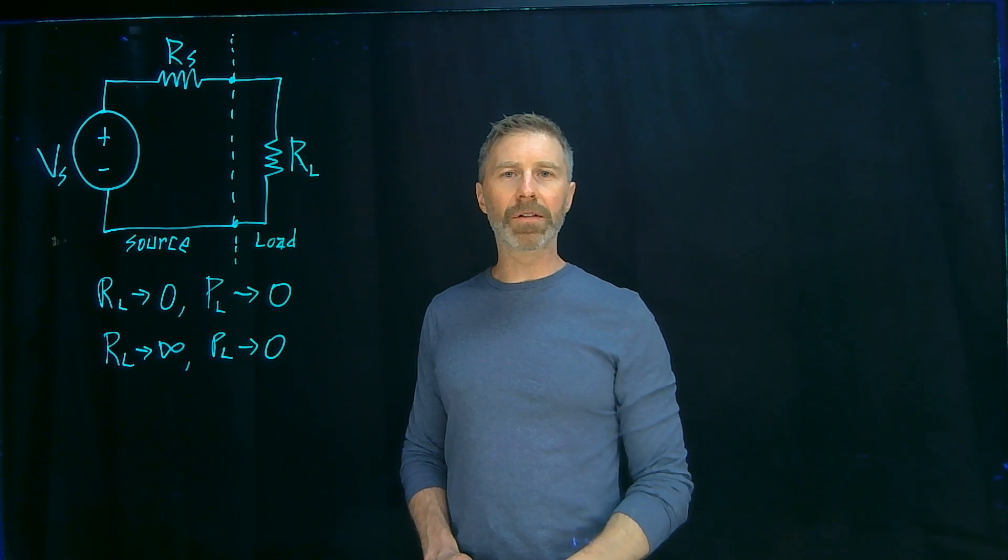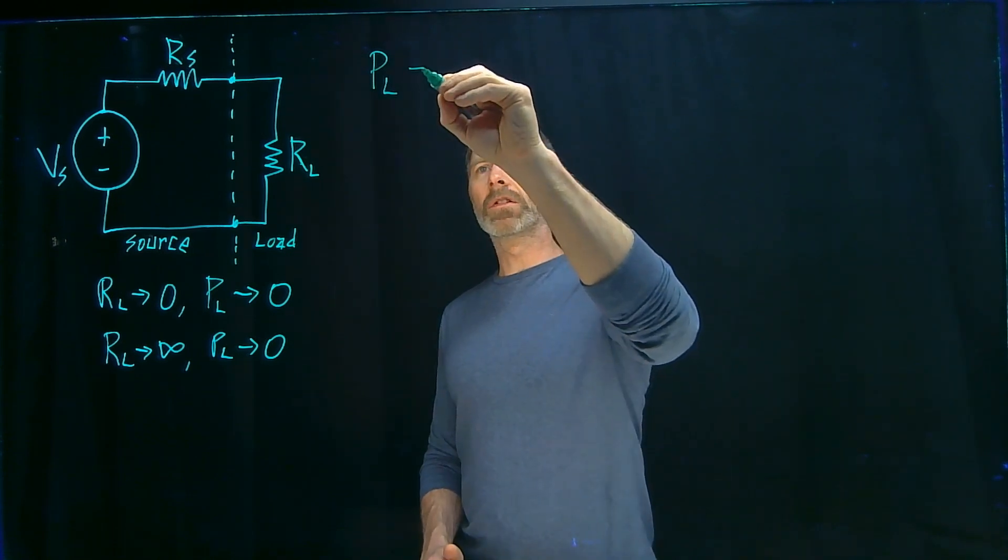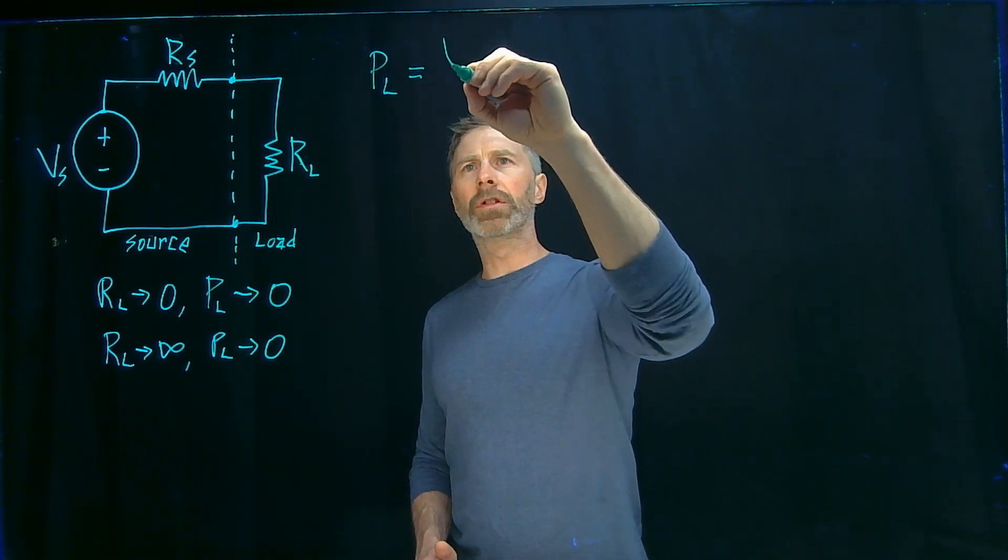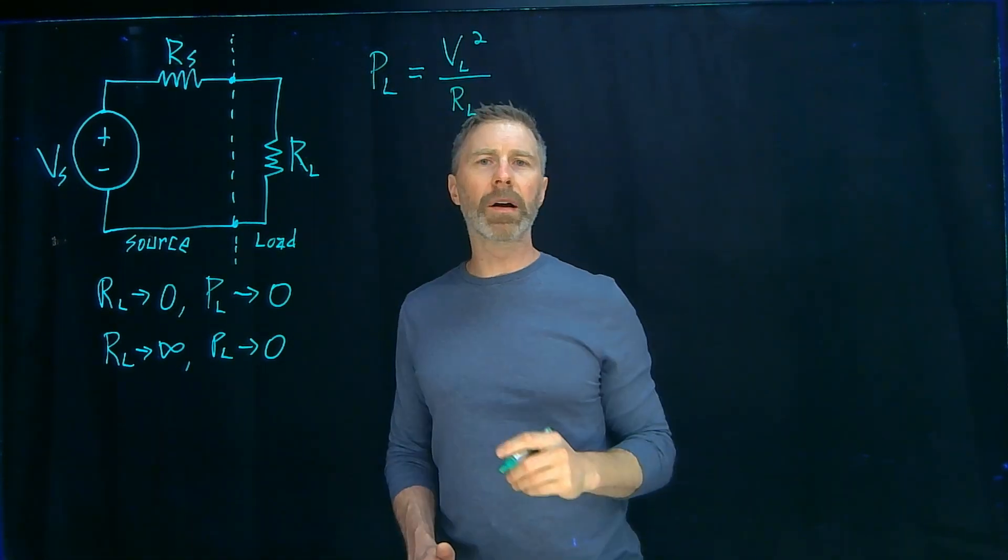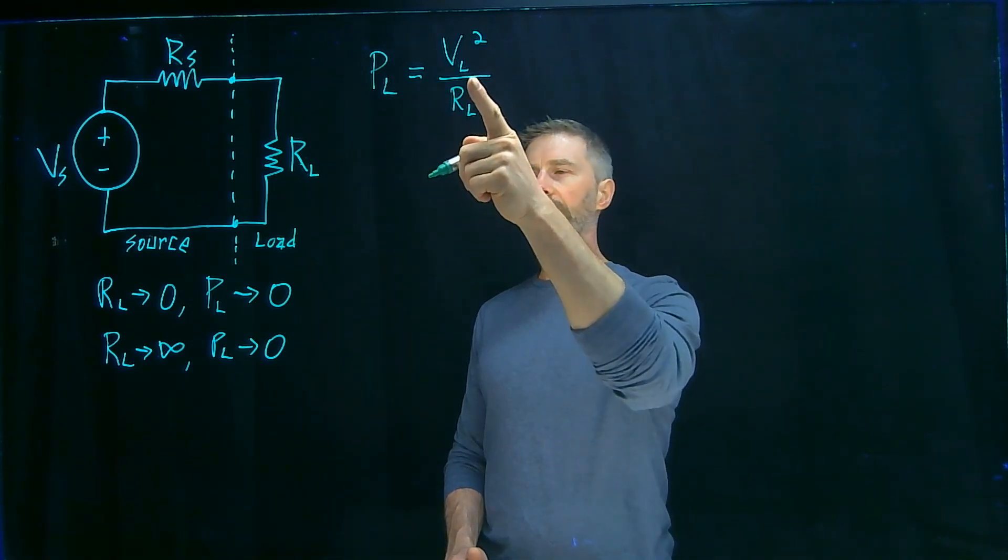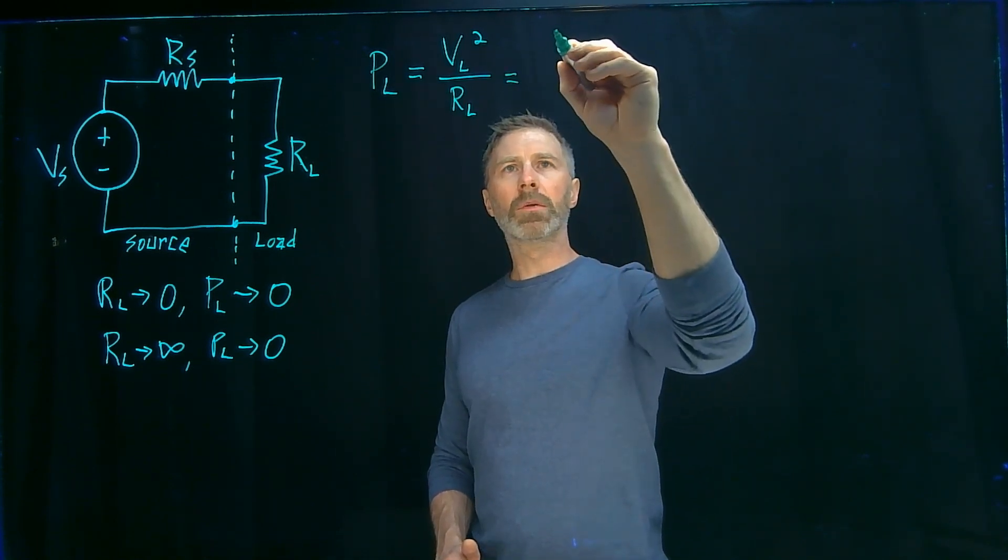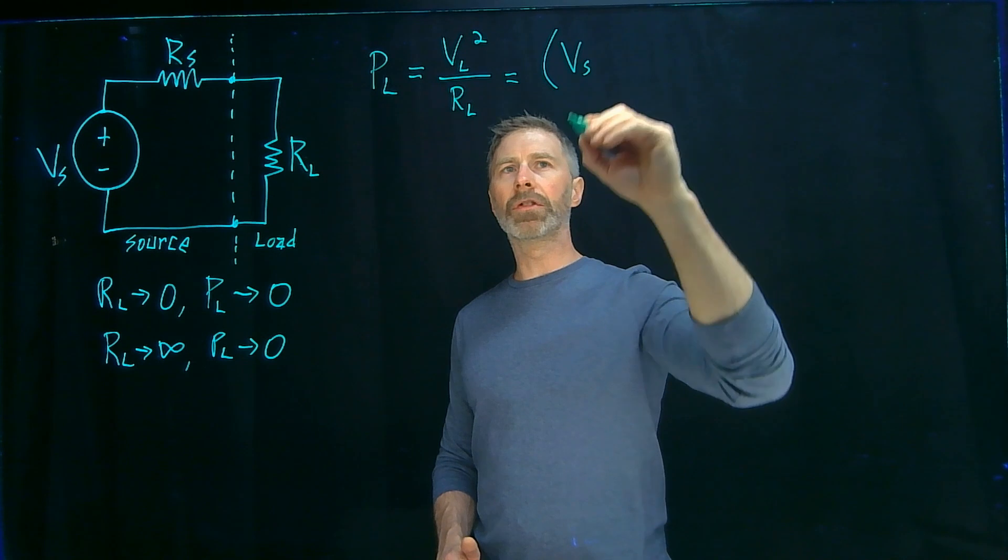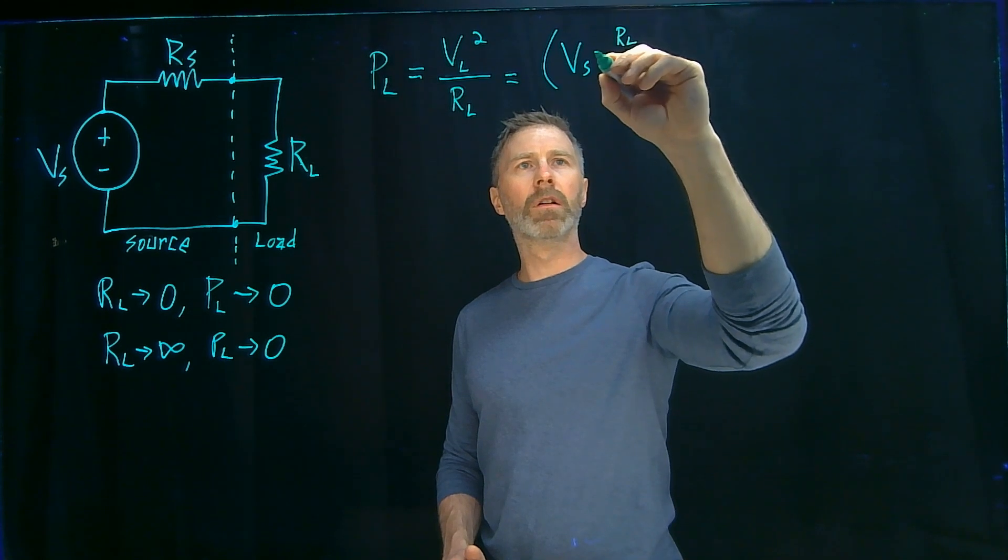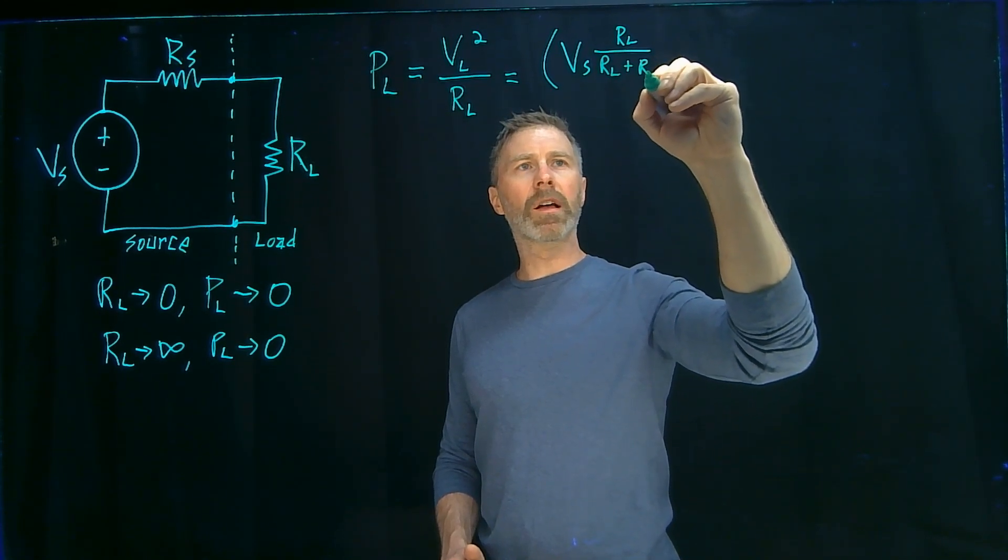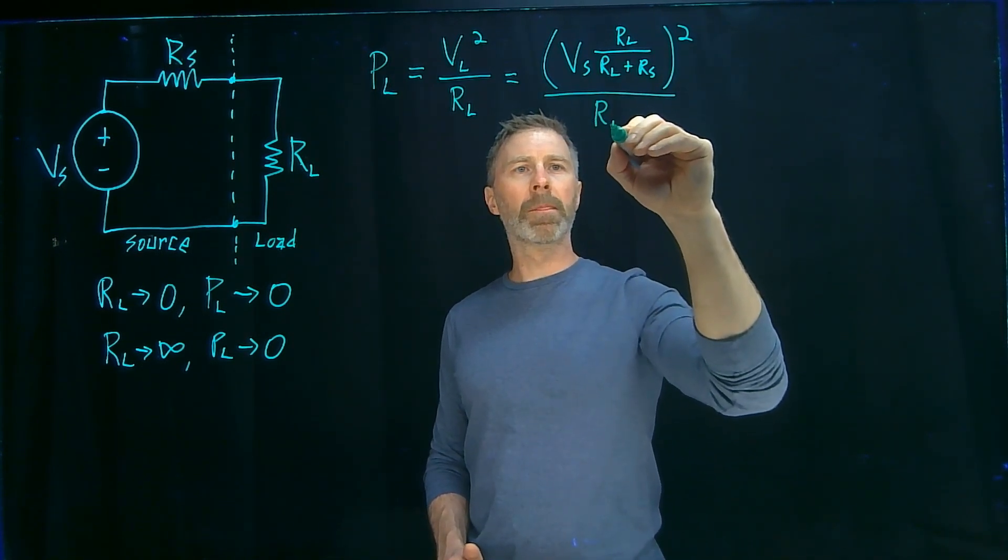But what is the value of the resistance that's going to give us the maximum power? Well, to start off with, we should look at the equation for power. This can come in several different forms, but let's look at the voltage form. So the voltage across the load squared divided by the load resistance. Now we can express the voltage across the load in terms of the components that we have in this circuit. So you can just use a simple voltage divider to figure out what the voltage across the load is going to be in terms of the source voltage and the two resistances. And that's going to be RL over RL plus RS, and then this whole thing is squared. That voltage is squared, and then we divide by RL for that term.